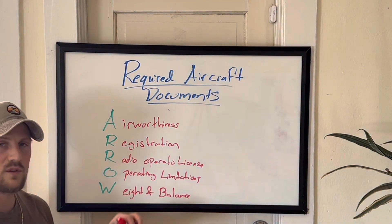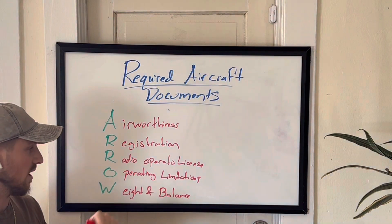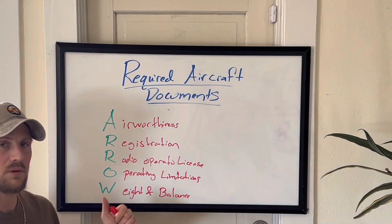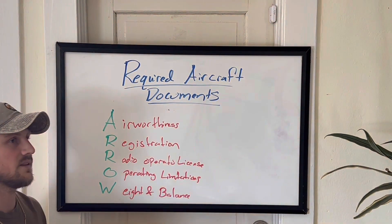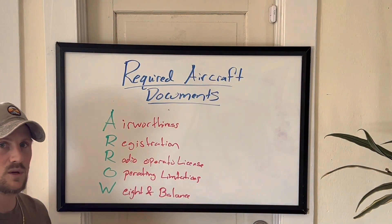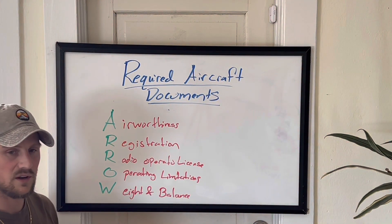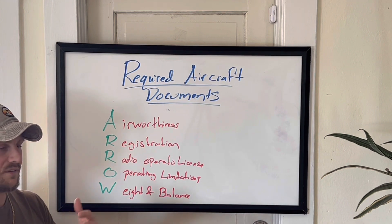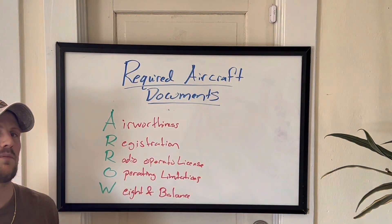The operating limitations — where do you find these? These can be in the approved POH, Pilot Operating Handbook, or AFM, whichever is the approved document for your aircraft. They can also be on placards or markings inside your aircraft, such as markings on the airspeed indicator or placards that might show additional speeds or throttle settings. So anything in the POH or any of those placards and markings on the aircraft combined make up the operating limitations, and you'll need to carry the approved POH or AFM with you.